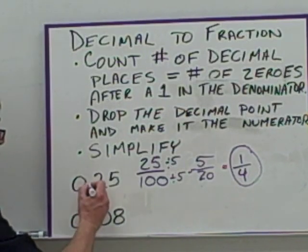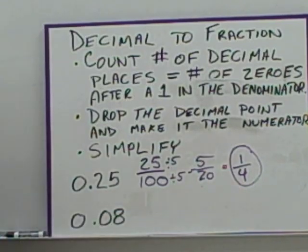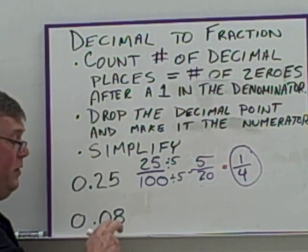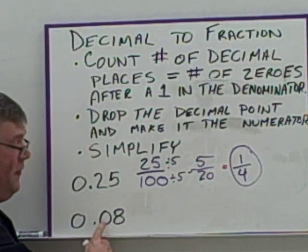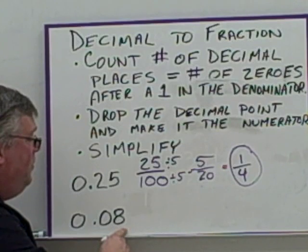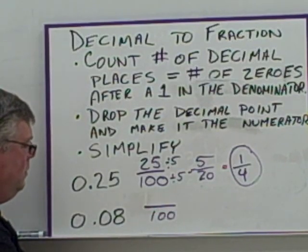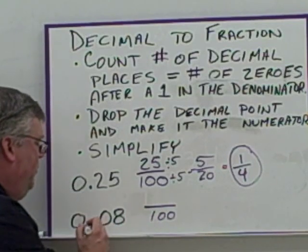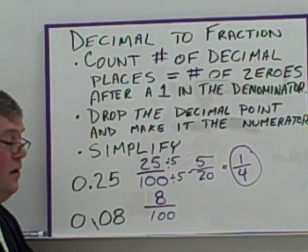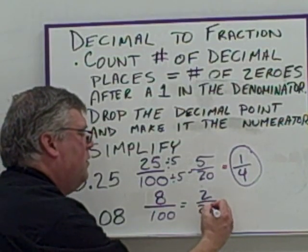For 0.08: there are two decimal places — don't count this as one just because the first digit is a zero; you need to count that zero. Two decimal places means the denominator is 100. Drop the decimal and the leading zero, leaving eight over 100. Both are divisible by four, so you get 2 over 25 as the final fraction.